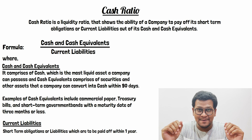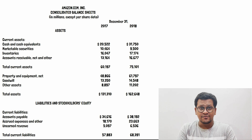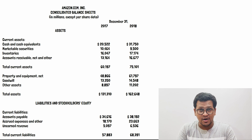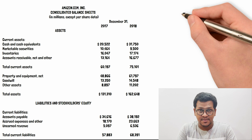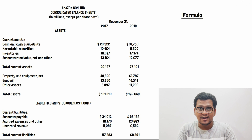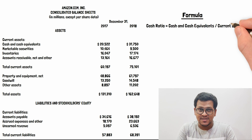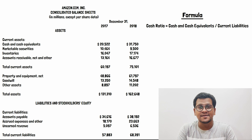Now let's work on an example. In front of us we have the balance sheet of Amazon.com for the years 2017 and 2018. We are going to compute the cash ratio of Amazon.com for the year 2017. The formula, as we know, is cash and cash equivalents divided by current liabilities.